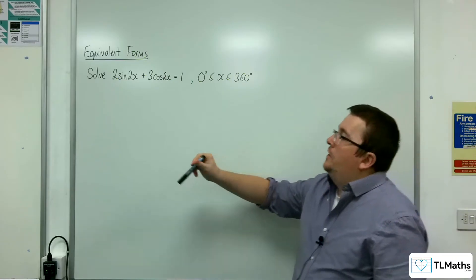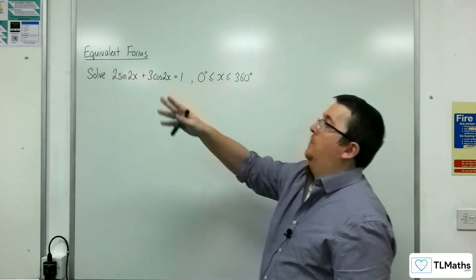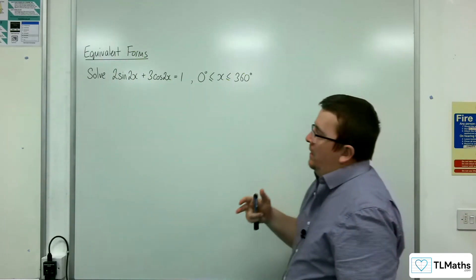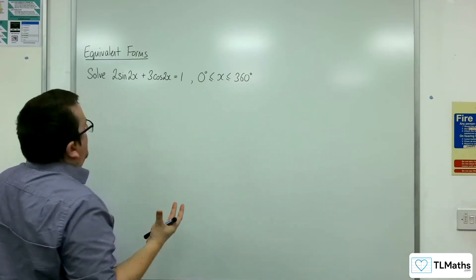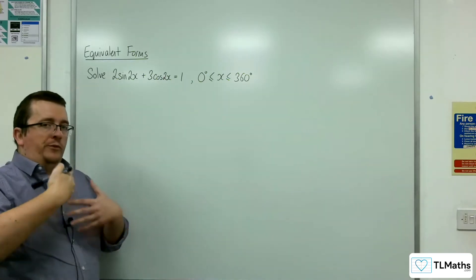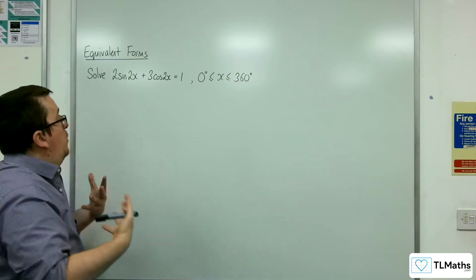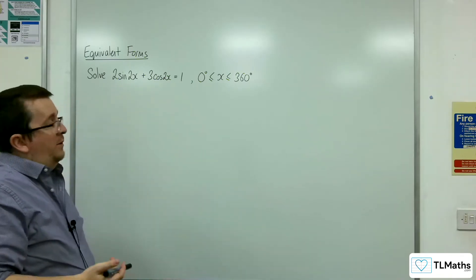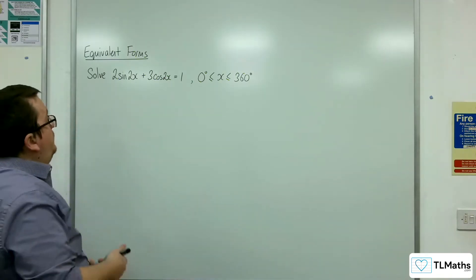You can guess from the fact that this is in the equivalent form section what we're going to use. We need to come up with an equivalent form setup that will replace the 2sin2x + 3cos2x.